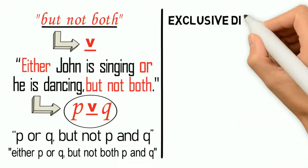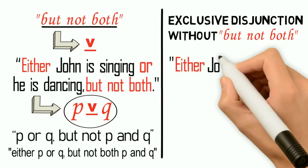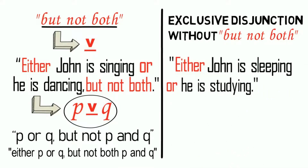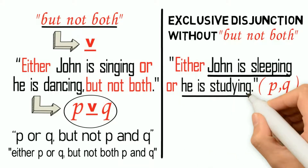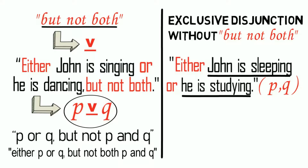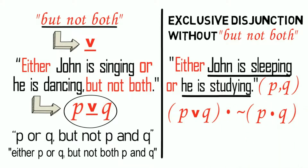In some cases the exclusive disjunction does not contain the phrase 'but not both,' but if we analyze a statement it denotes exclusivity. Consider this example: 'Either John is sleeping or he is studying.' Although this statement does not contain the phrase 'but not both,' it is pretty obvious that it is not possible for John to be sleeping and studying at the same time — hence this is an exclusive disjunction. If we let P stand for 'John is sleeping' and Q for 'he is studying,' then the statement is symbolized as 'P or Q, but not P and Q,' or simply with the underlined wedge.